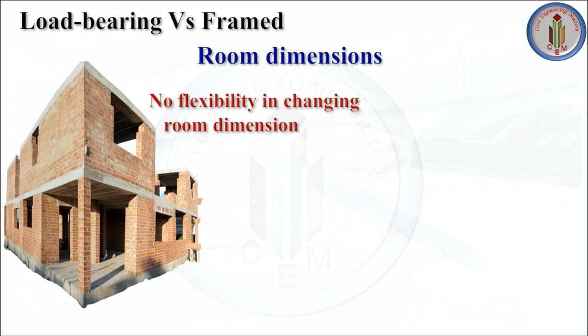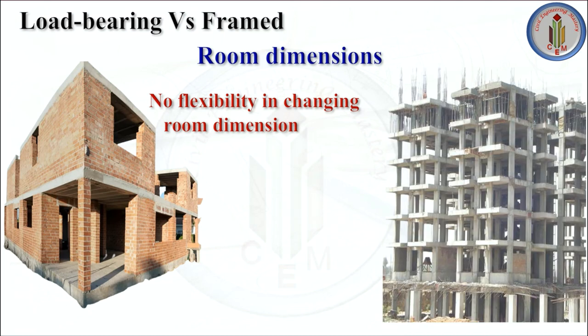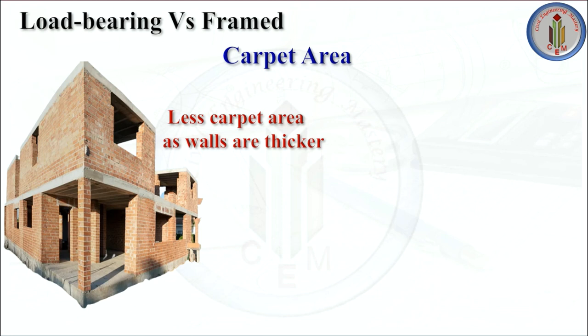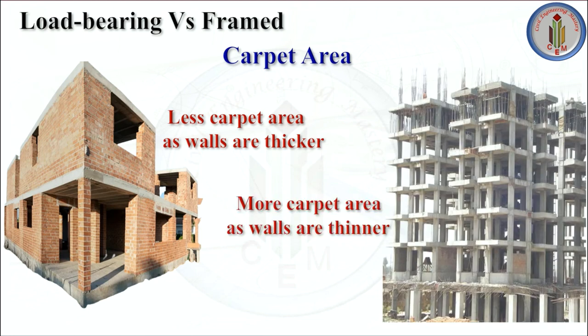Room dimension: there is no flexibility in changing room dimensions in load bearing structure, because the walls cannot be adjusted since they are the major load carrying element. Whereas in frame structure we can change the room dimensions because walls are not carrying any loads — beams and columns carry all the loads — so we can alter the walls. Carpet area: we have less carpet area in load bearing structure as walls are thicker, whereas in frame structure we have more carpet area as walls are thinner.